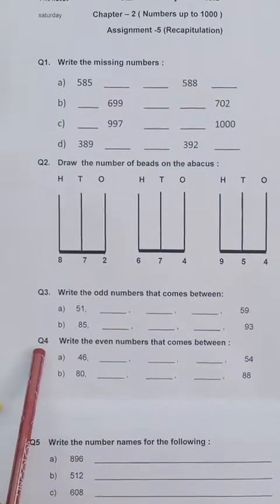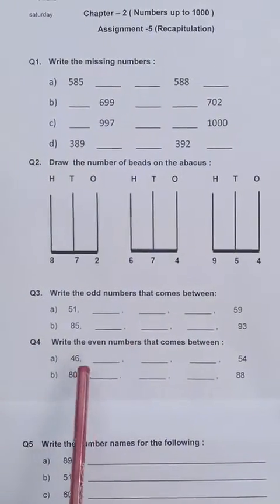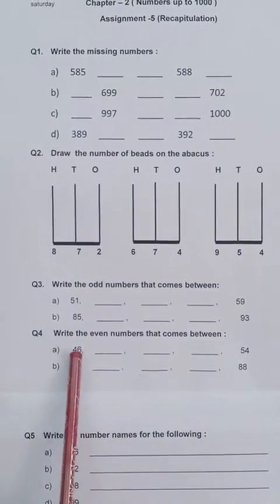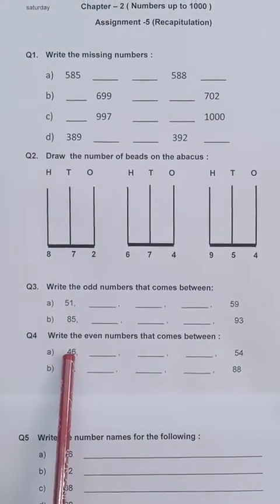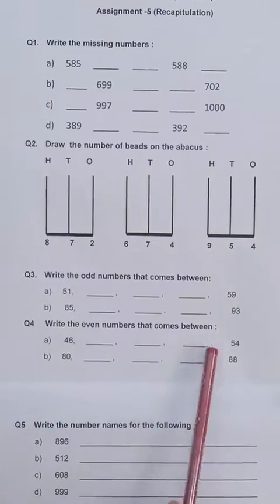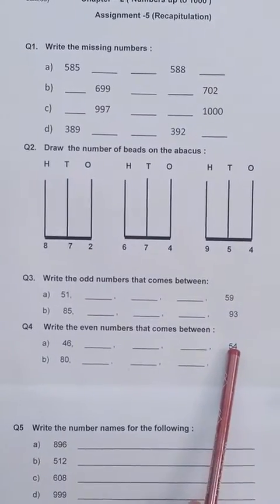In question number 4 you will write the even numbers. That means numbers which are having 0, 2, 4, 6, 8 at their 1's place they are even numbers. So after 46 you will write 48, 50, 52 and 54 is already given.